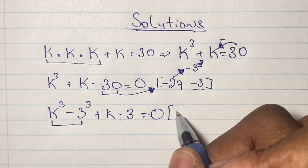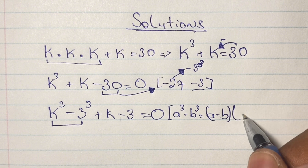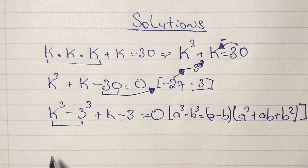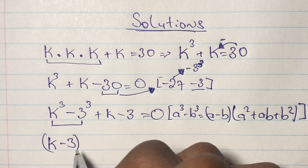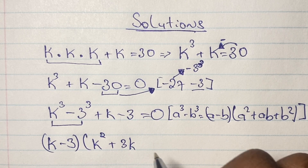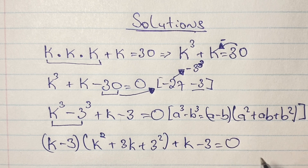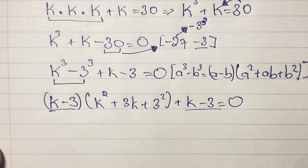We can express k³ minus 3³ as a difference of two cubes. The difference of cubes formula expands as: a³ - b³ = (a - b)(a² + ab + b²). Rewriting k³ - 3³ using that expansion gives us (k - 3)(k² + 3k + 3²), and then we still have plus k minus 3 equals zero. Notice that we have (k - 3) appearing twice.